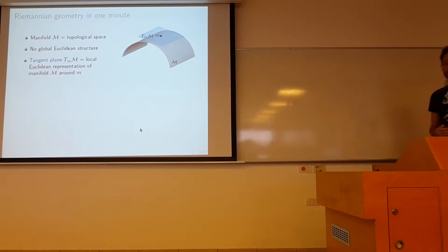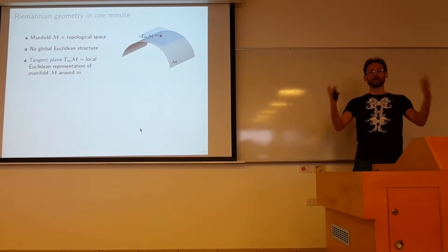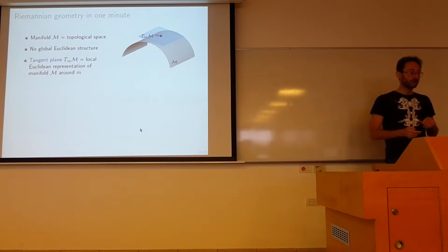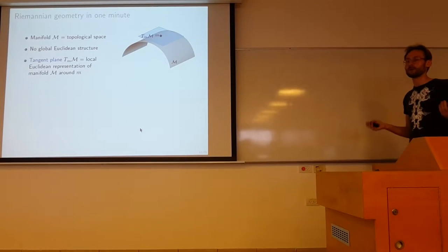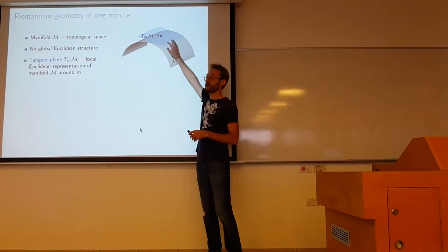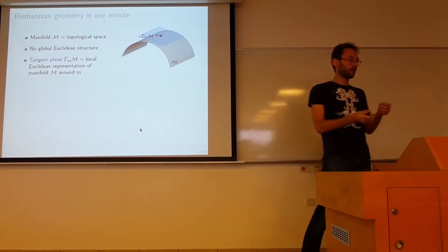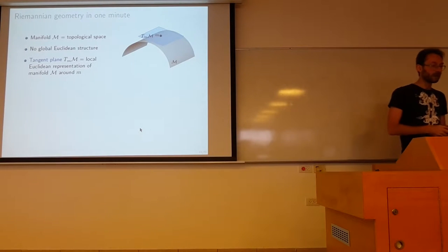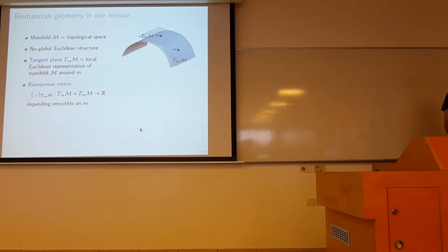Just to start with the model of our shapes: basically it's a two-dimensional surface, a manifold — the boundary of a three-dimensional volumetric object. The main difference you need to know about manifolds as opposed to Euclidean spaces is that they are not Euclidean spaces; they don't have a global vector space structure. They are only locally diffeomorphic to Euclidean space. In the case of a two-dimensional manifold, locally you can think of it as a plane — this is called the tangent plane. You can define an inner product on this tangent plane, called the Riemannian metric, which allows you to measure angles, distances, and lengths on the manifold.